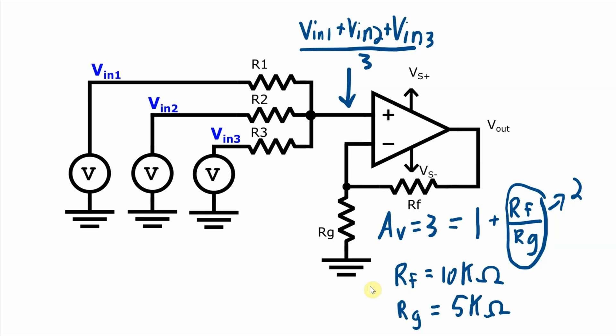So then the overall voltage gain will be Vin, or the overall output of the circuit will be Vin1 plus Vin2 plus Vin3 over 3, but then multiplied by 3 to give me an output of Vin1 plus Vin2 plus Vin3 to give me a true summing amplifier.